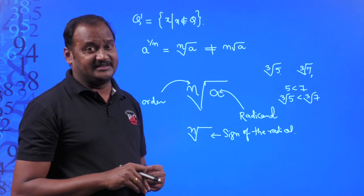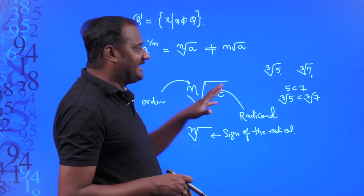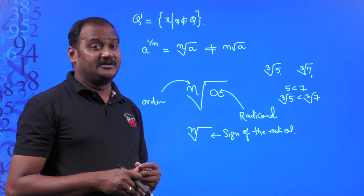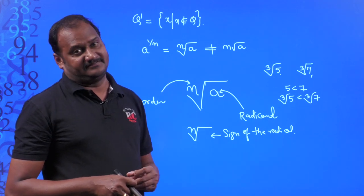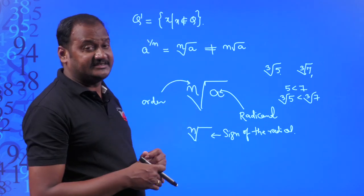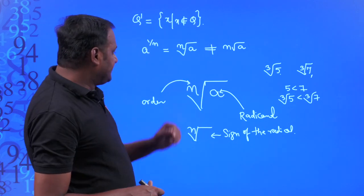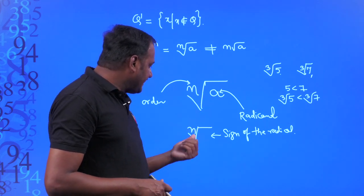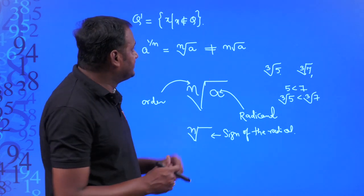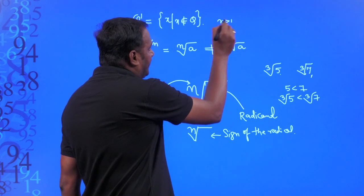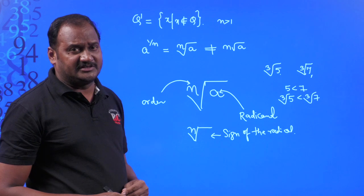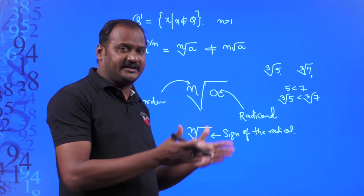If the radicals are not of the same order — that is, if they have different orders — then we cannot directly say which is greater or smaller. We will have to make the orders of the radicals the same first. There is a procedure to make the orders the same. Let us also discuss the types of radicals. In nth root a, n is the order of the surd, and according to the definition n must be a positive integer greater than 1, so n takes values 2, 3, 4, 5, and so on.